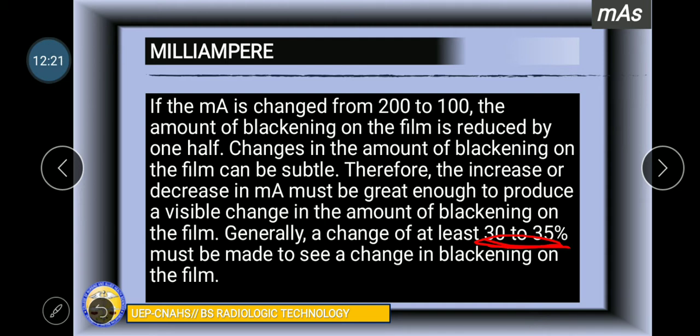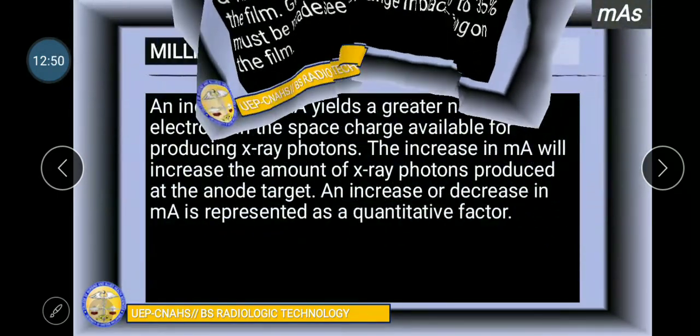Changes in the amount of blackening on the film can be subtle. However, the increase or decrease in MA must be great enough to produce a visible change. A change of at least 30 to 35 percent must be made to see a change in the blackening on the film.